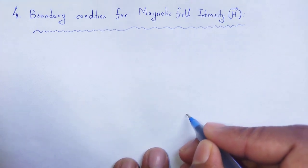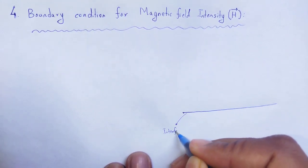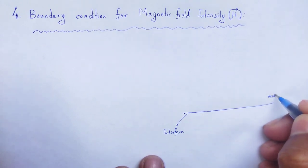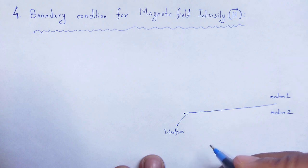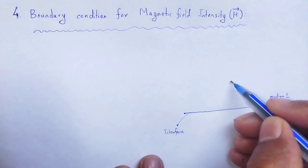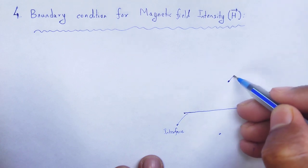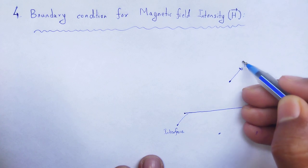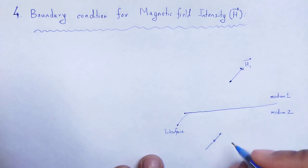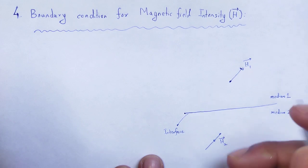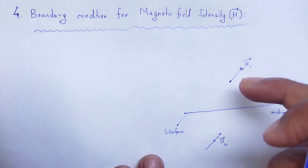We choose an interface which separates medium 1 from medium 2. A point on medium 1 has magnetic field intensity H1, and another point on medium 2 has magnetic field intensity H2. How these two are related at the interface? In other words, what is the boundary condition for magnetic field intensity?